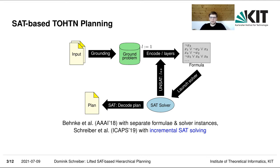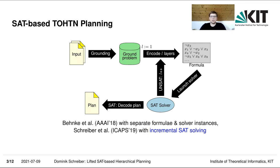In an incremental SAT solver, you only use a single SAT solver instance for all the iterations. You add to a monotonically growing set of clauses and just set a number of assumption literals for each iteration. This helps the solving procedure because you don't need to re-encode the entire formula every time, and the solver is able to reuse conflicts it learned in a previous iteration.